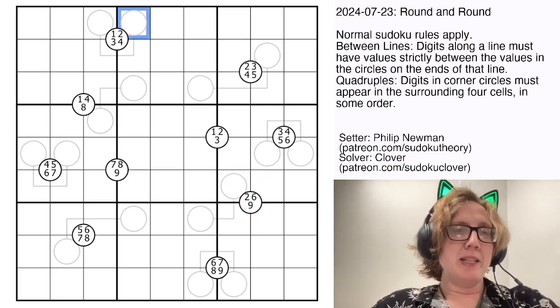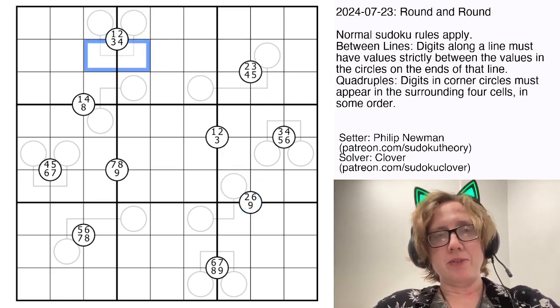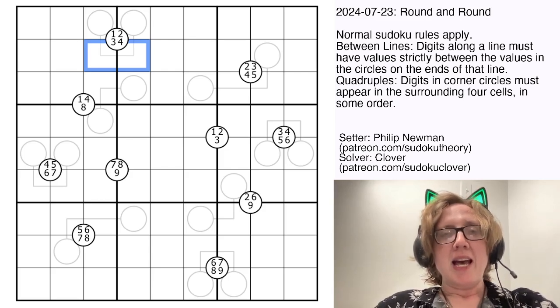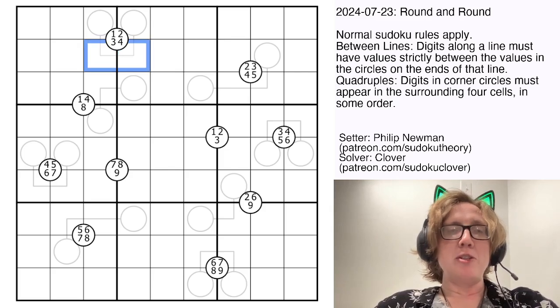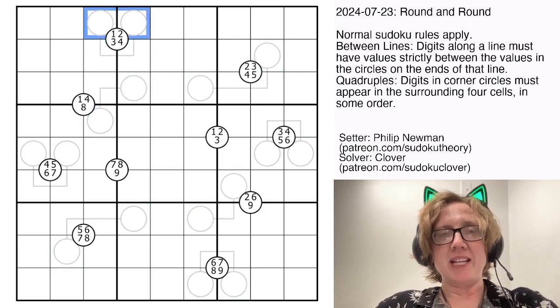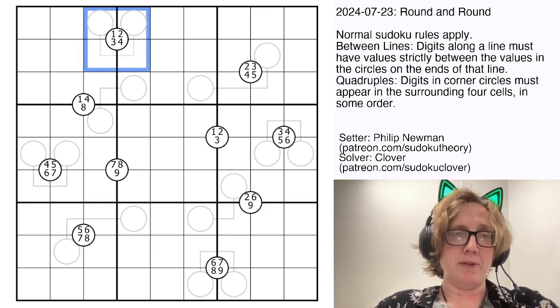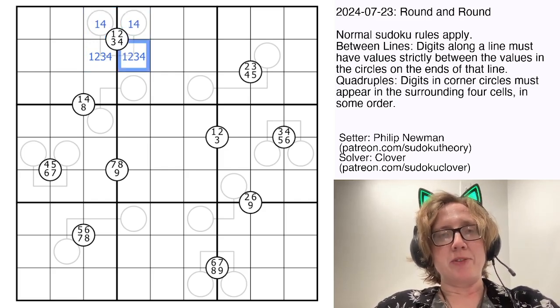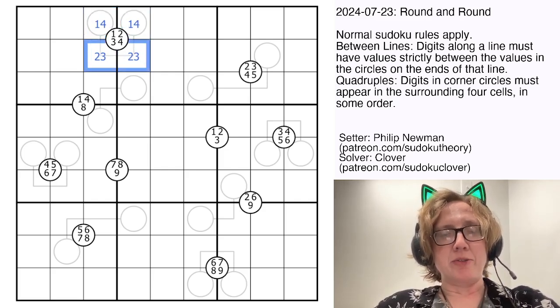There are also between-lines - that's these pairs of circles that are connected by a line. Whenever you have one of these, the digits on the line connecting the circles have to have values in between the values that are in the circles attached to them. So for example, we know these cells are 1, 2, 3, and 4. These digits have to be in between these ones, so these are 1 and 4, and these are 2 and 3.